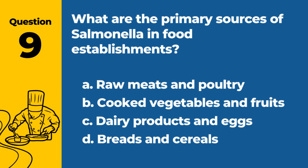Question 9. What are the primary sources of salmonella in food establishments? A. Raw meats and poultry. B. Chopped vegetables and fruits. C. Dairy products and eggs. D. Breads and cereals. Answer: A. Raw meats and poultry. Raw meats and poultry are primary sources of salmonella in food establishments.